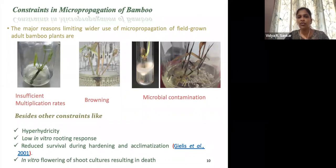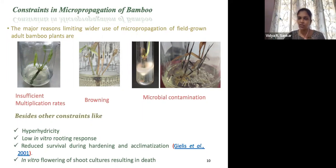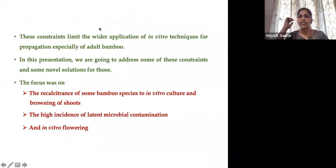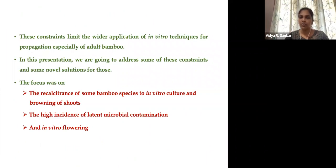Although protocols are available for 54 species, there are still many constraints for the development of successful micropropagation methods. The major restrictions are insufficient micropropagation rate, tissue browning, and microbial contamination. Besides these, we have hyperhydricity, low in vitro rooting response, reduced survival during hardening and acclimatization, as well as in vitro flowering, which leads to the death of the culture.